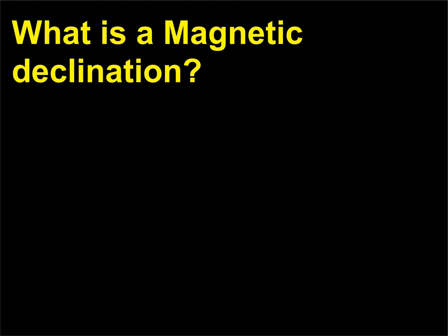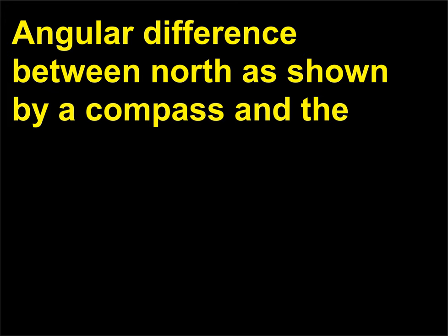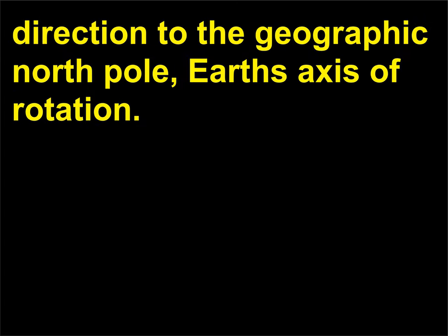What is magnetic declination? Magnetic declination is the angular difference between north as shown by a compass and the direction to the geographic north pole — Earth's axis of rotation.